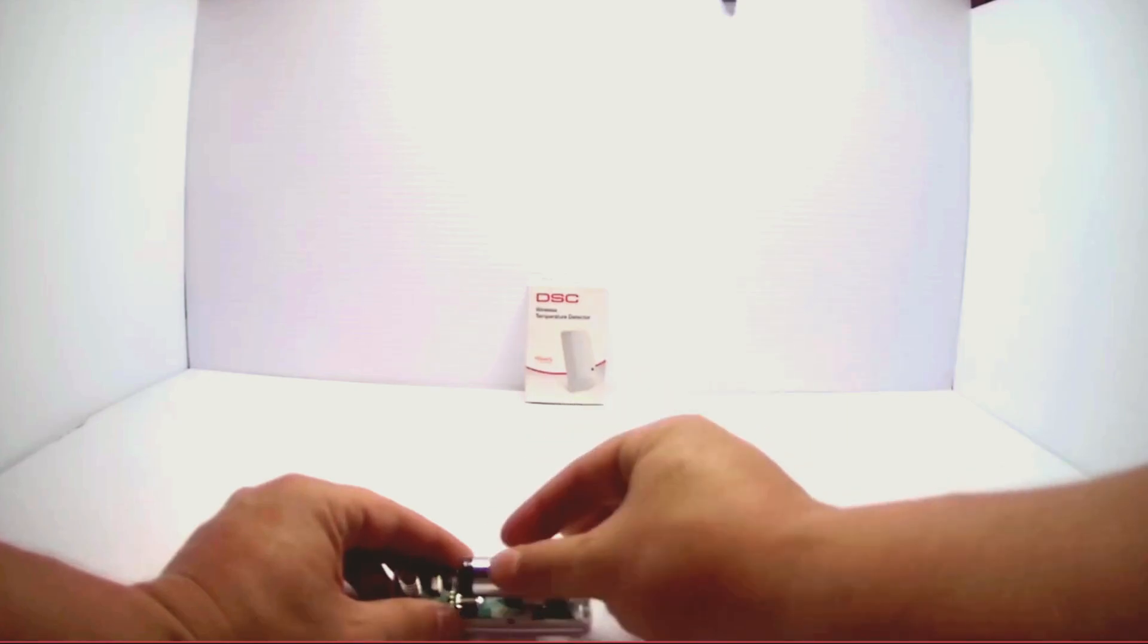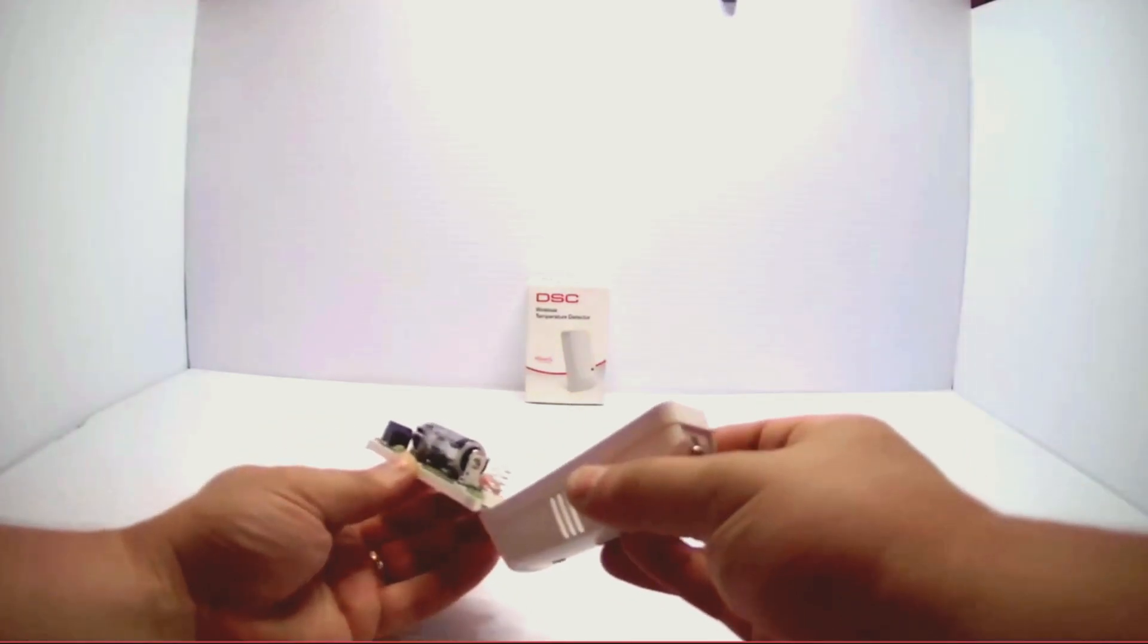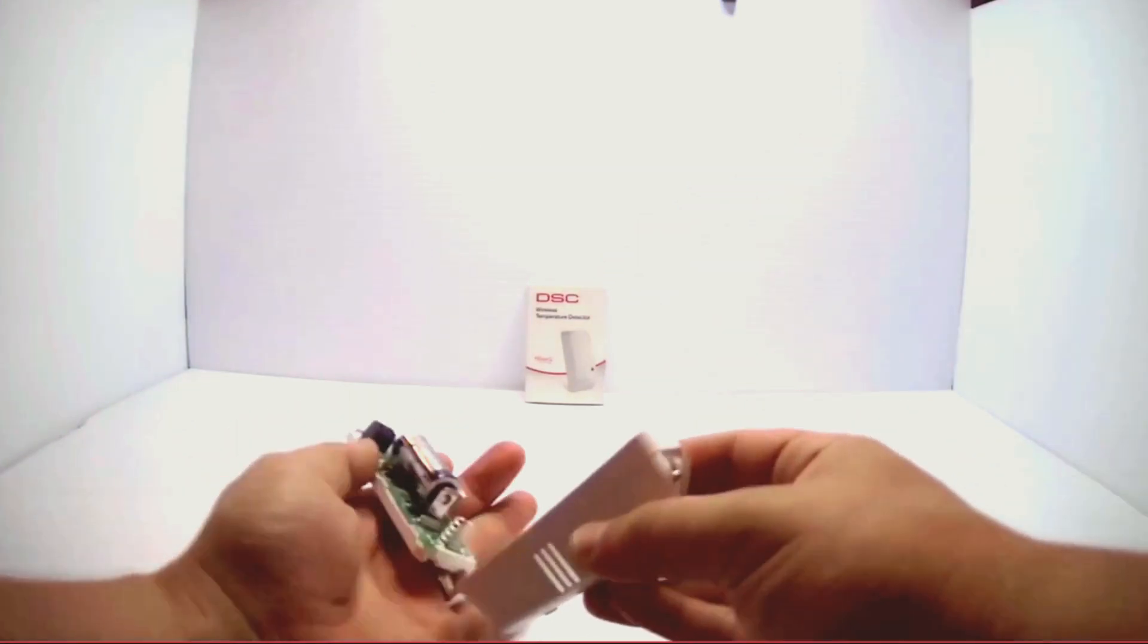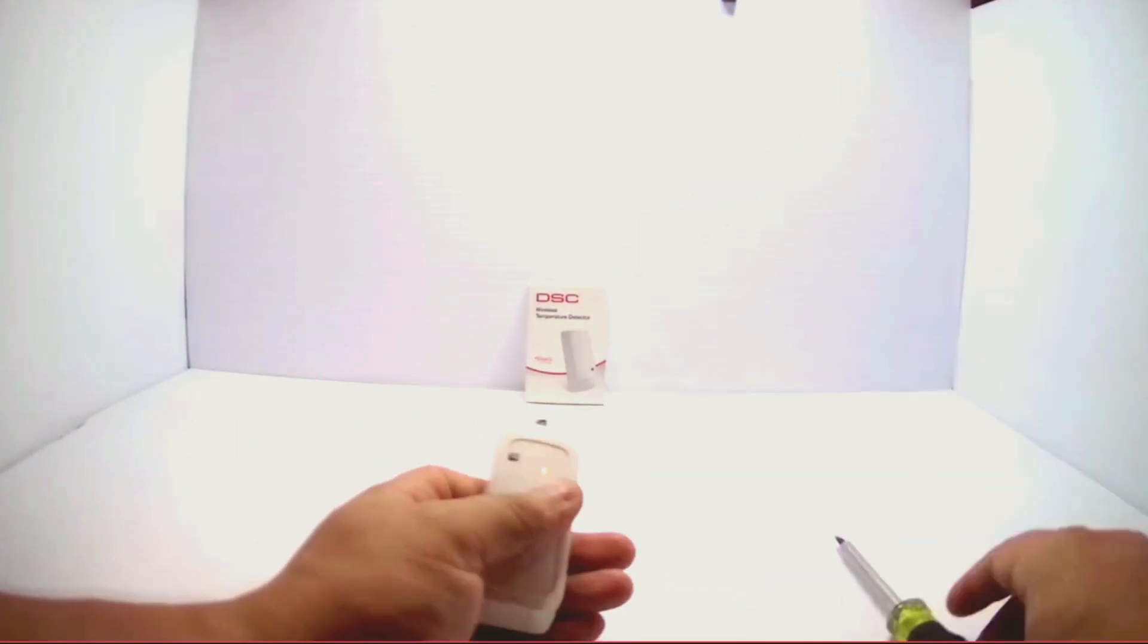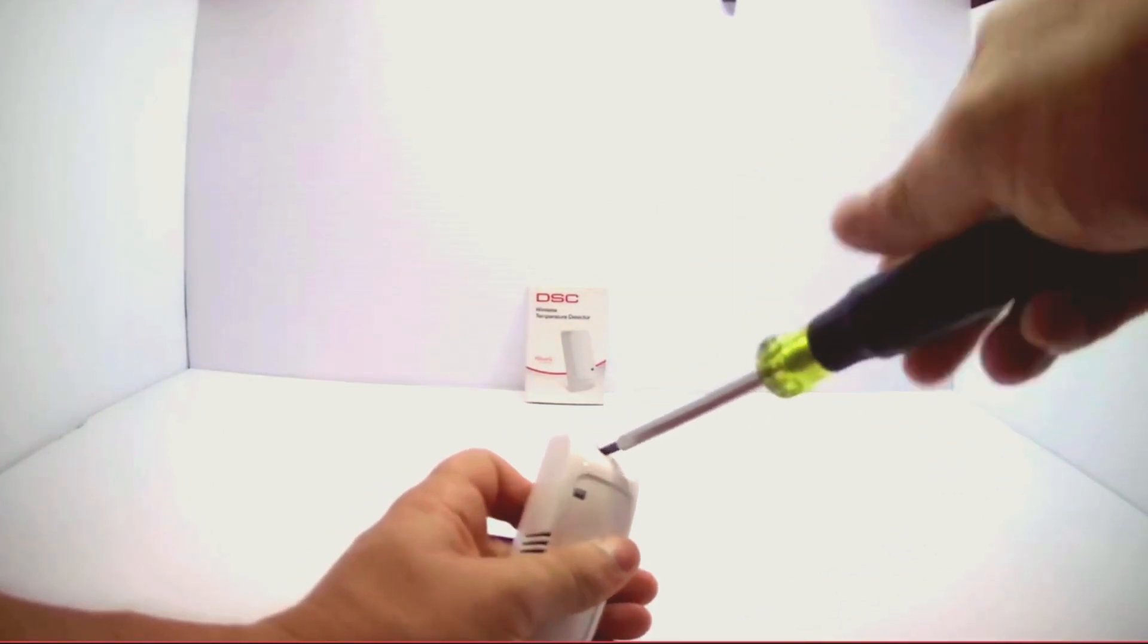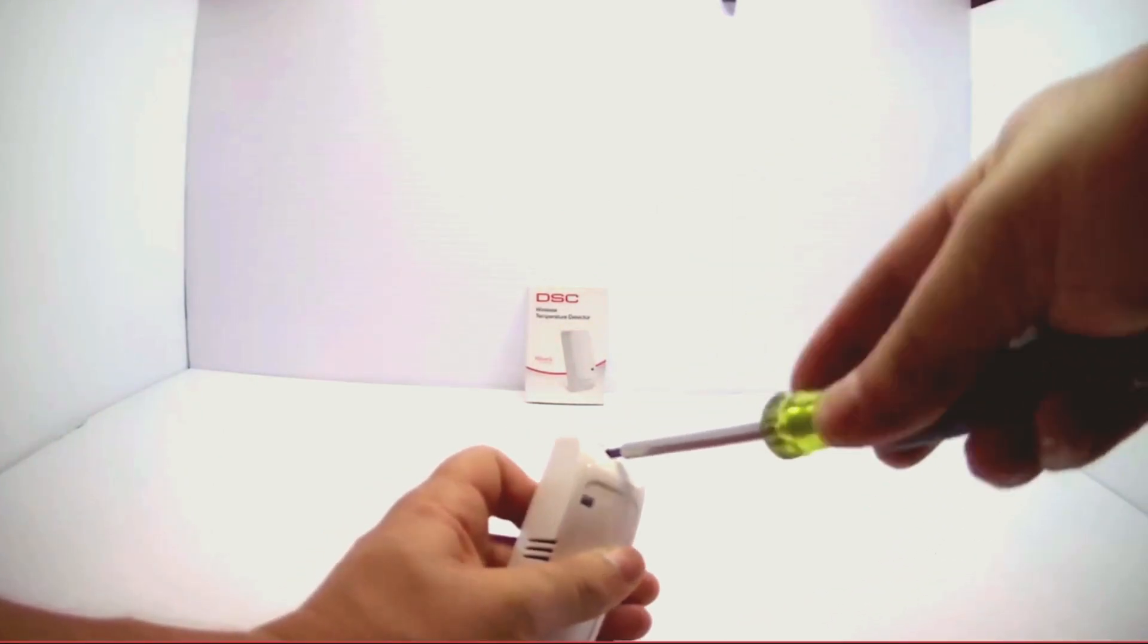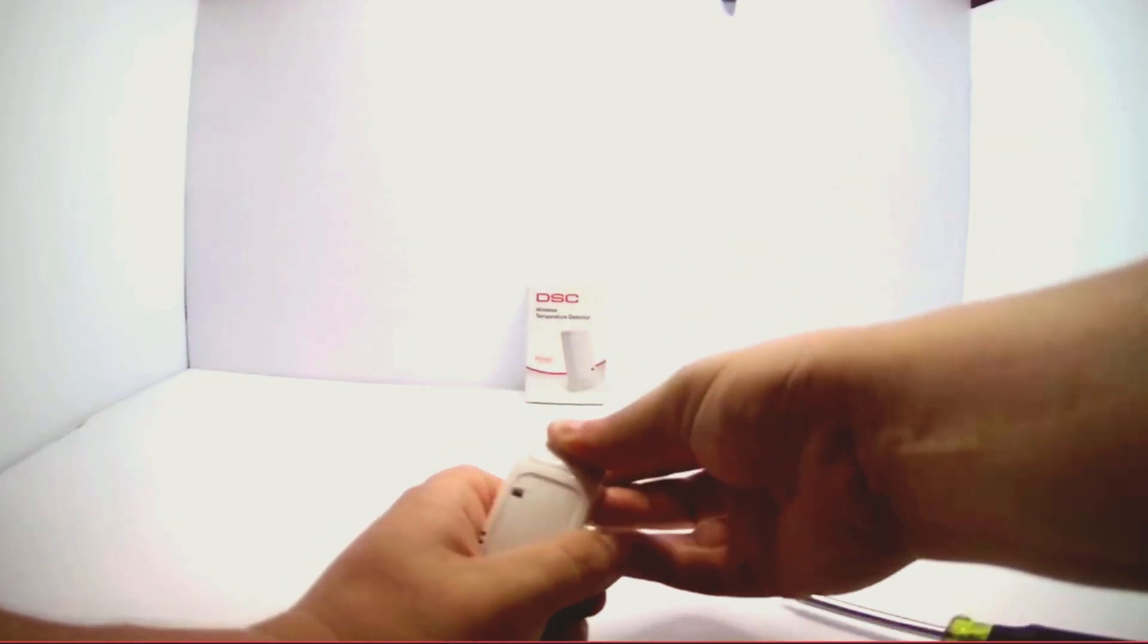Snap it back in. On the bottom, you'll want to make sure you line up these rivets in the grooves first, and then push the top on. Screw it back shut—you will see a red flashing light. Snap your cover right back on, and you're good to go.